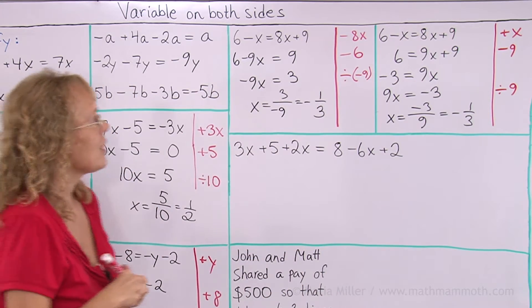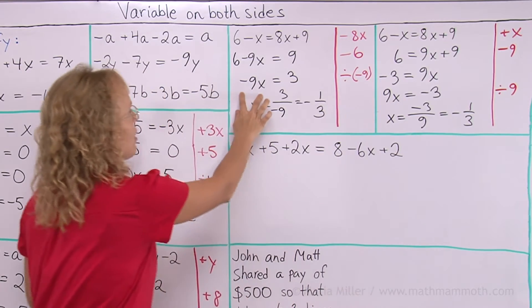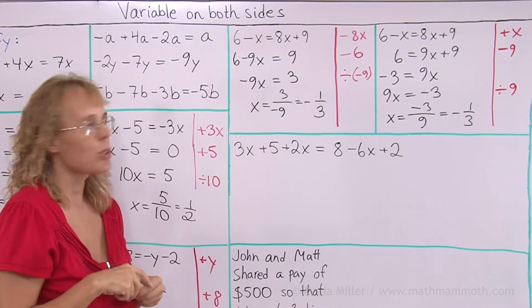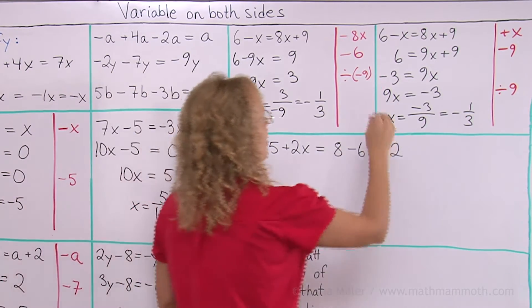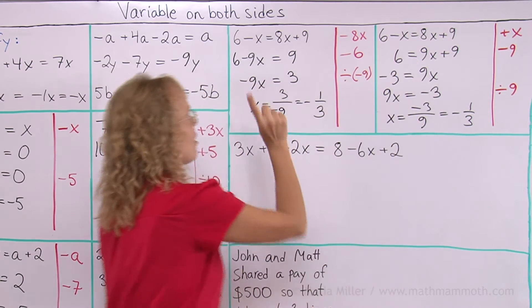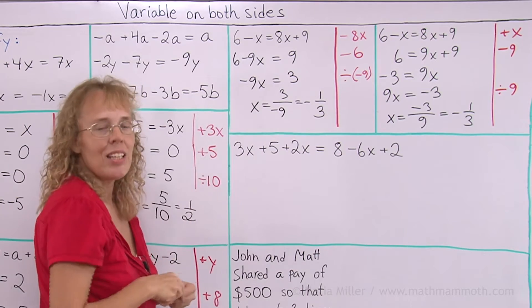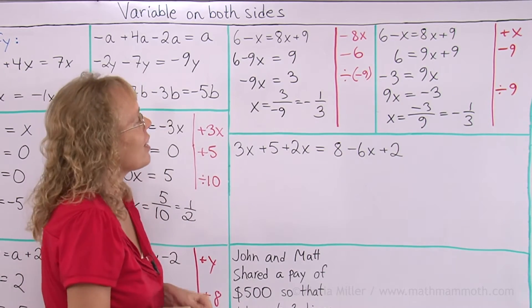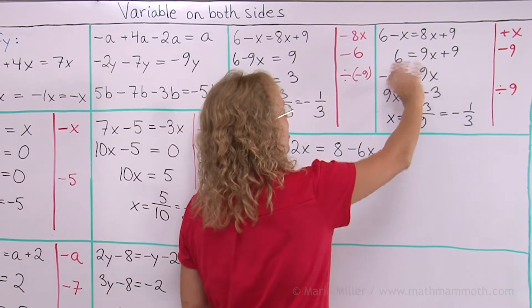Oftentimes, it is easier if you don't have to deal with these negative 9x's, negative terms. So, in this case, it might look easier if you get rid of this negative x, instead of getting rid of the 8x. The choice is always yours, and you can at any time flip the sides too.